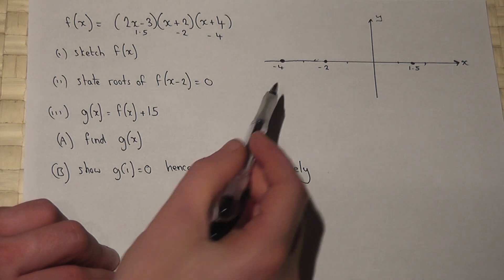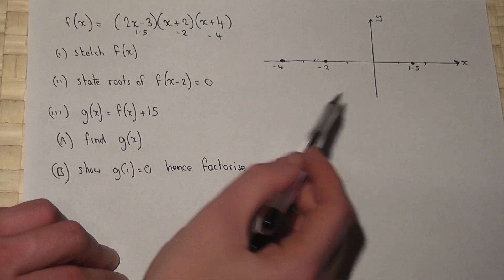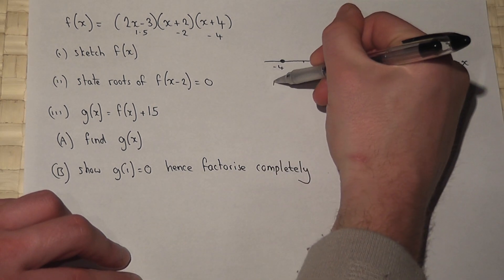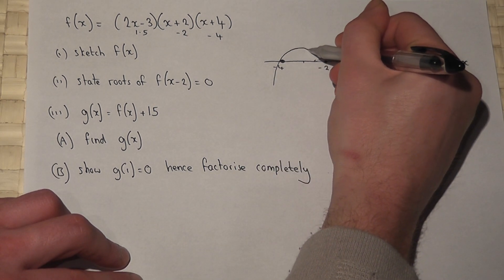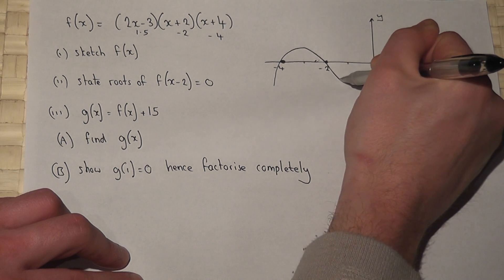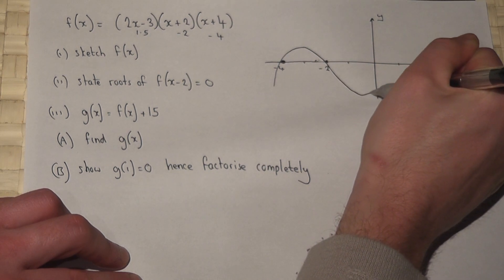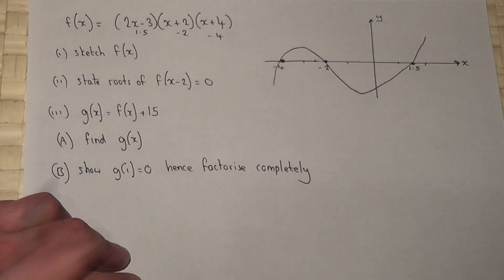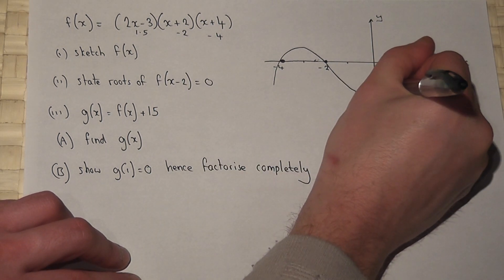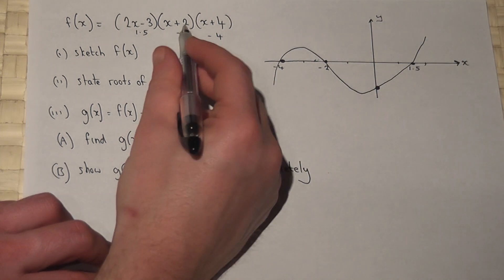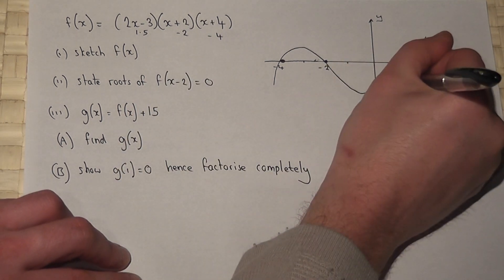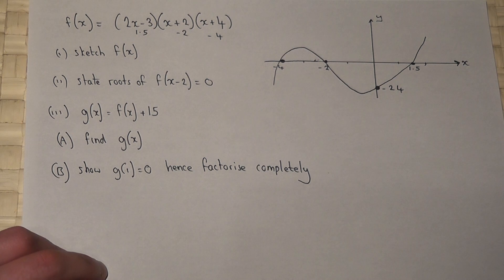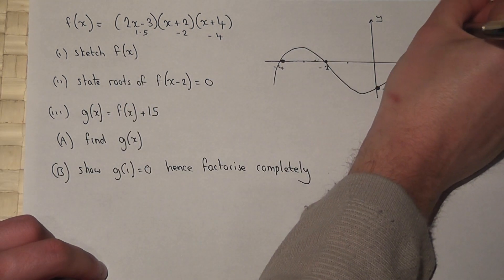The trick here is to sketch the curve and then mark on the y-intercept afterwards. A nice smooth curve passing through all those points will look something like that. This value was 2 times 4 times minus 3, which is minus 24, and that is f of x.